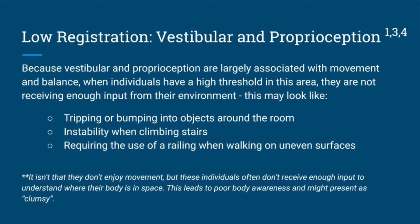Now let's talk about vestibular and proprioception. These two senses work together to produce balanced and coordinated movements. When these individuals are not receiving enough vestibular and/or proprioceptive input from their environment, they may present as being very clumsy. They tend to trip over or bump into things, may feel unstable when walking upstairs, and may require the use of a railing when using steps or walking on uneven surfaces. It is not that low registration individuals do not like the sensation of movement - they are simply not getting enough information from the world around them, so they have a difficult time understanding where their body is in space, which may make them seem clumsy.